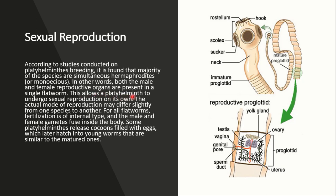This allows platyhelminthes to undergo sexual reproduction on their own. The actual mode of reproduction may differ slightly from one species to another, but for all flatworms, fertilization is internal — meaning male and female gametes fuse inside the body. Besides this, some platyhelminthes release cocoons filled with eggs, which later hatch into young worms similar to mature worms.